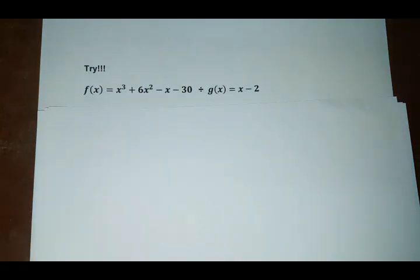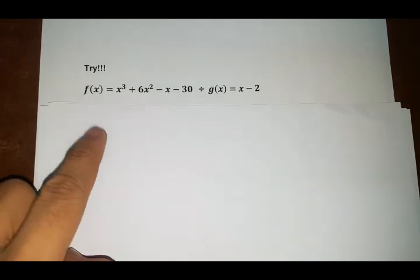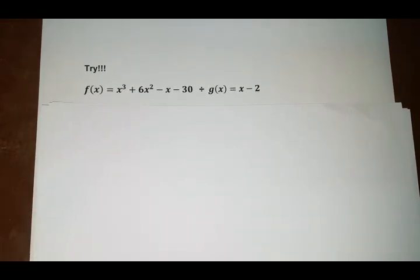Okay. This time I want you to try to solve for this. So divide f of x to g of x. So our f of x is x cubed plus 6x squared minus x minus 30 divided by x minus 2. Okay. Feel free to pause the video to check your answer and to check also if you are learning.